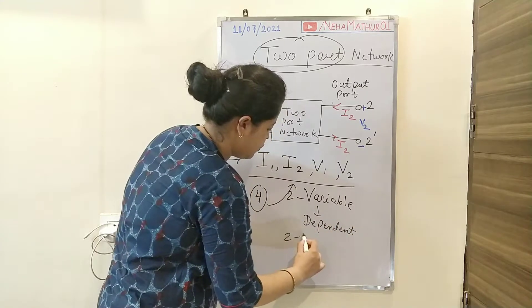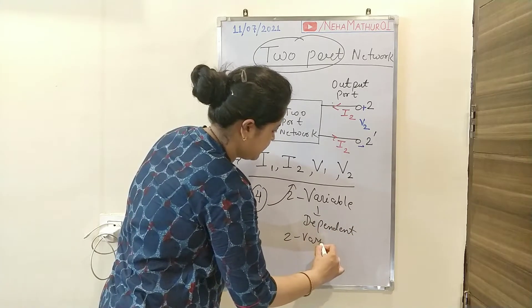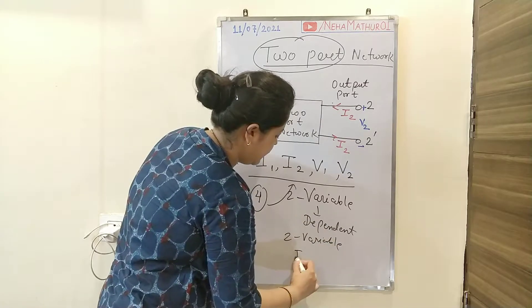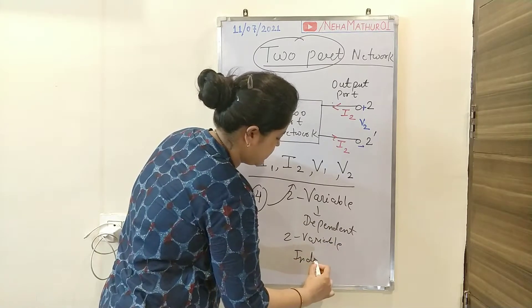Two variables will be dependent variables and the remaining two variables will be independent variables.